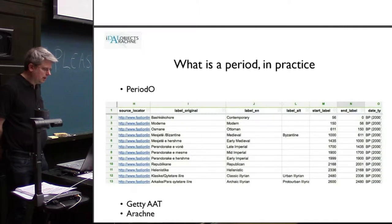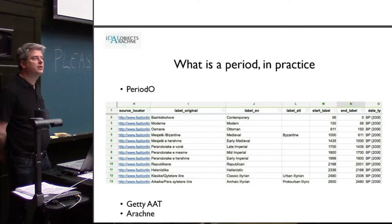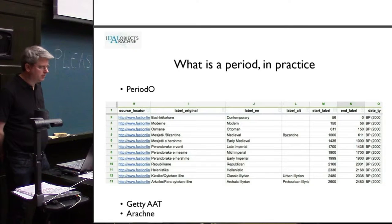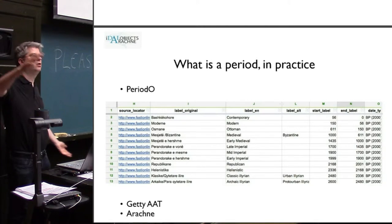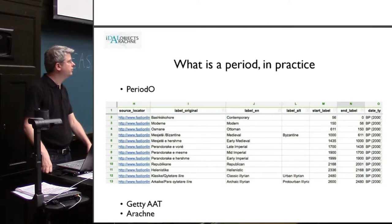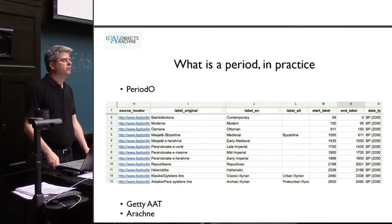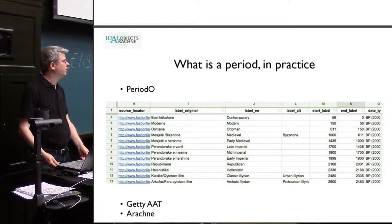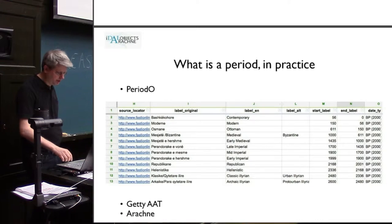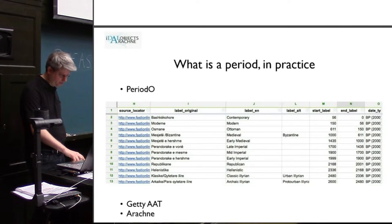Periodo is a list of terms from different sources with start times and end times. You have the Getty AAT with all the temporal terms, and of course we have Arachne ourselves, where we also have a list of terms which have no associated conceptual information — they are just there. This is actually a feature in Arachne and not a bug. However, in Chronontology we do it differently.